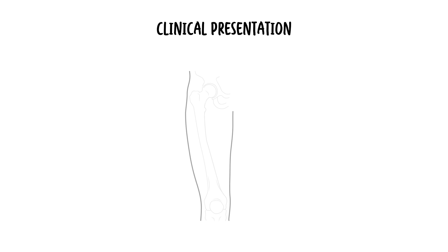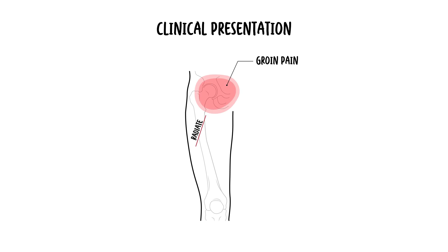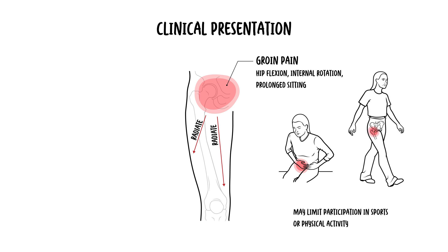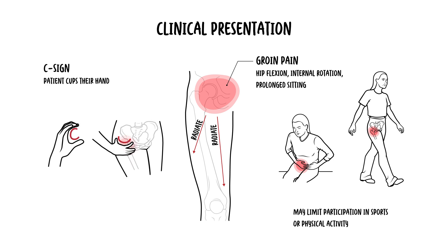Patients with femoral acetabular impingement typically present with insidious onset groin pain, which may radiate to the lateral hip, buttock, or thigh. Pain is often exacerbated by hip flexion, internal rotation, and prolonged sitting, and may limit participation in sports or other physical activity. The classic symptom is the C sign, where the patient cups their hand over the lateral hip to describe the location of the pain.